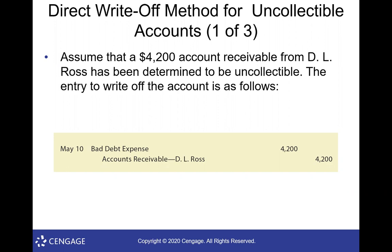The first method is the direct write-off method. It's not the preferred method and not accepted under GAAP — generally accepted accounting principles — because it doesn't work well with the matching principle, which says the expense of something has to match up with any revenue gained from it. Some small businesses that deal mostly in cash use it. For example, if a $4,200 account receivable from D.L. Ross is uncollectible, you debit bad debt expense and credit accounts receivable, removing it from AR and taking it as an expense.